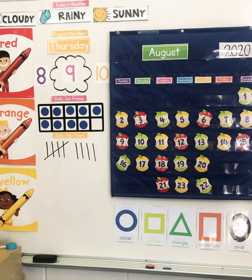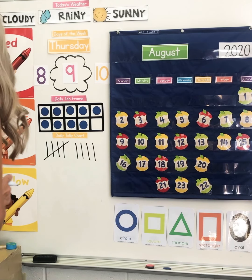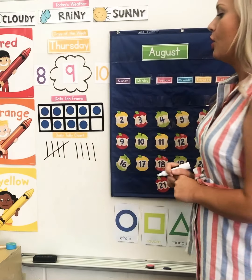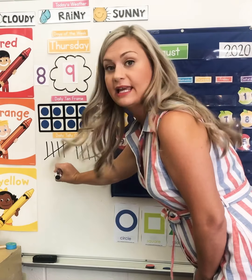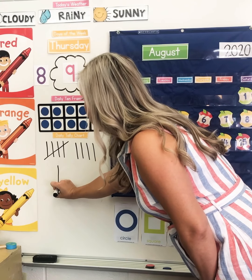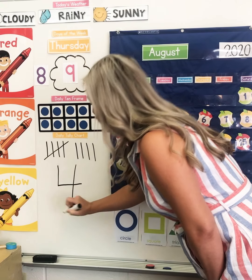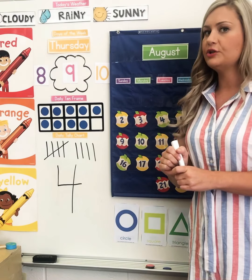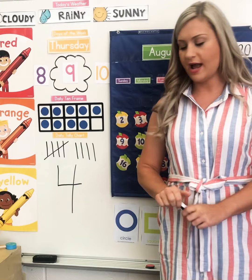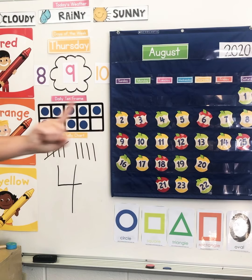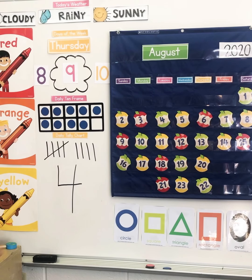We're going to practice forming a different number today. We're going to practice forming the number 4. I want you to look at Miss Lee form the number 4. I'm going to go down, across, then down some more. That's the way to make a 4. Let's do that with our fingers. Ready? We're going to go down, across, then down some more. That's the way to make a 4.